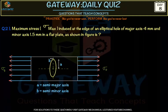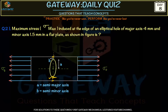Next question: find the maximum tensile stress σ_max induced at the edge of an elliptical hole in a flat plate, where the major axis is 4 mm and the minor axis is 1.5 mm. Since there is a discontinuity in geometry, we use the geometric stress concentration factor.